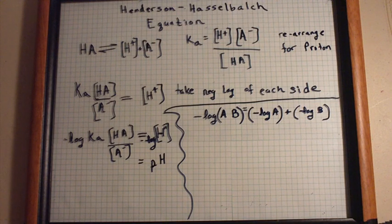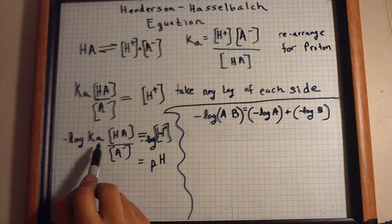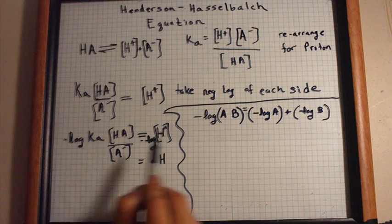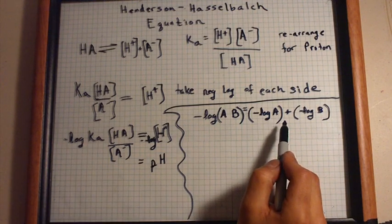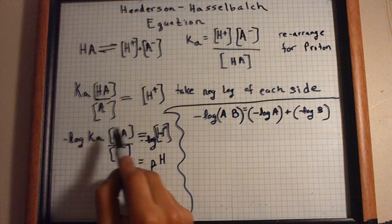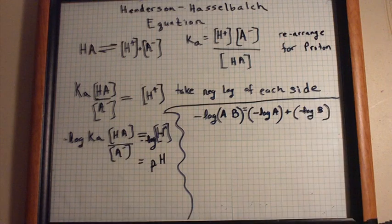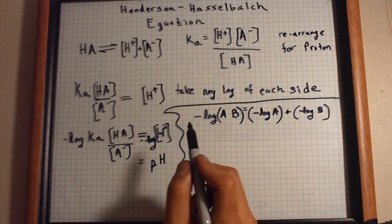So, essentially, we're considering Ka, the acid dissociation constant, as this factor, and this as this factor. Alright, that wasn't too bad.